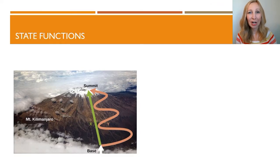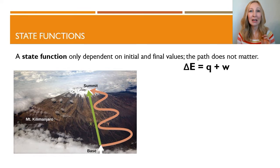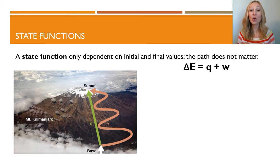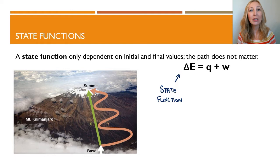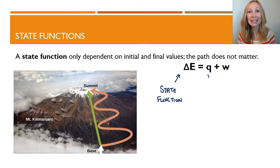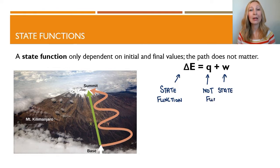We're going to take a side venture and talk about state functions. A state function is only dependent on the initial and final values — the path doesn't matter. Delta E is a state function: it doesn't matter how you get that change. You could gain a bunch, lose a bunch, gain a bunch, lose a bunch — the net, the sum of everything, is really what matters. Q and W are not state functions, so the path — the way that you get the Q and the way that you get the W — does matter.